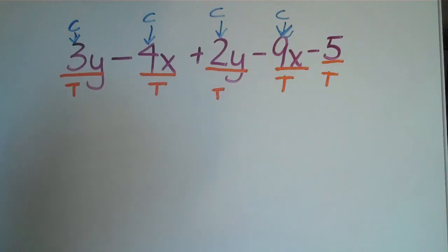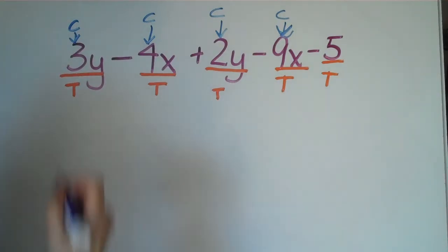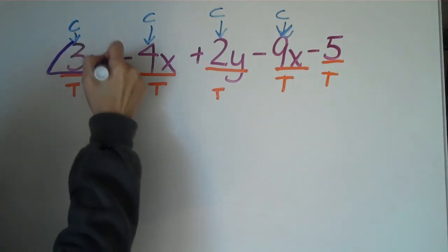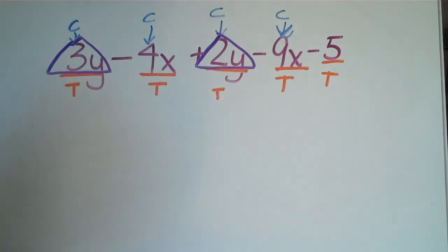Okay, like terms. Well, let's see what are like terms here. We have a 3y and we also have a 2y. Those are certainly matching. So I'm going to put a little triangle around 3y and one around 2y because we know at some point later we can combine those.